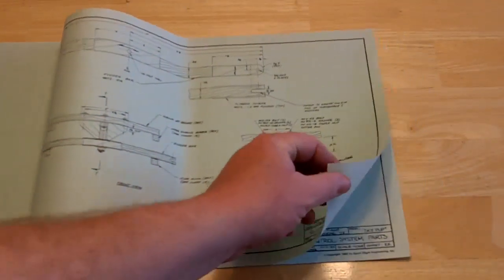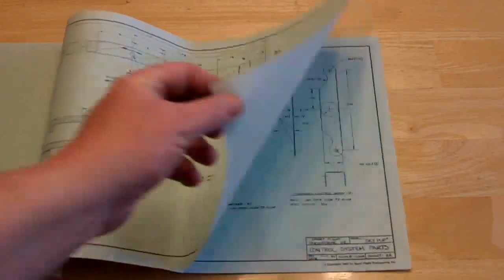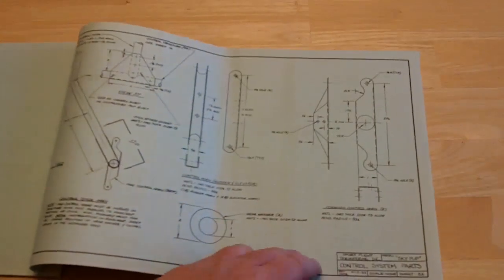Rudder bar. Remember, this is a two-axis airplane, so things are a little simple. A little simpler than most airplanes. And which, of course, means lighter weight.